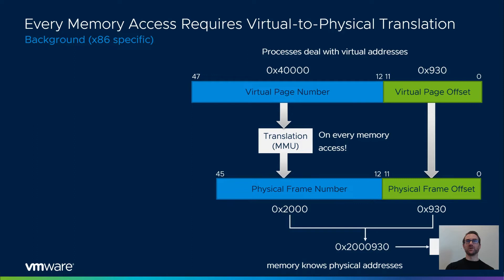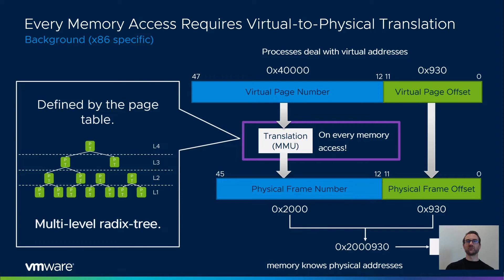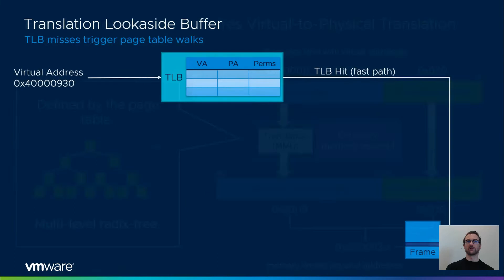Let me provide you with some background information illustrating the root of the problem. Applications run in virtual address spaces and use virtual addresses to access memory. The processor's MMU then translates these virtual addresses to physical addresses understood by the memory hardware. This translation is defined by the page table, which is a multi-level radix tree residing in memory. It is important to note that this virtual to physical address translation is performed on every load and store instruction the program executes, accounting for about 20% of all instructions. Walking the page table on every memory access is very expensive. The TLB caches the physical addresses of previously translated virtual addresses.